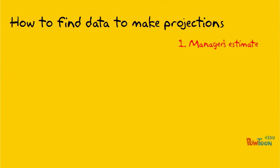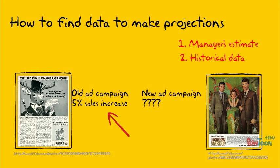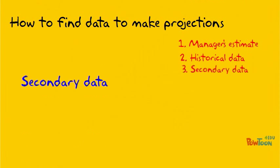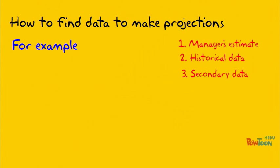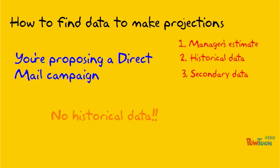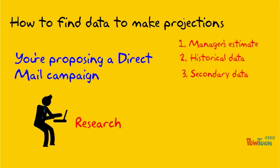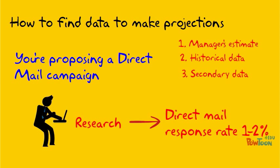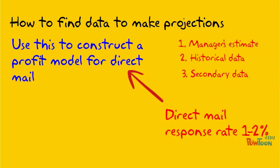Other times, you may have to look at historical data. If past ad campaigns increased sales by 5%, that might serve as your base case for a new campaign you're proposing. If that doesn't work, secondary data may be available. For example, if you're considering a direct mail ad campaign and you've never done this before, research may show the response rate is typically between 1% to 2%. You can use this to construct a profit model for your direct mail campaign.